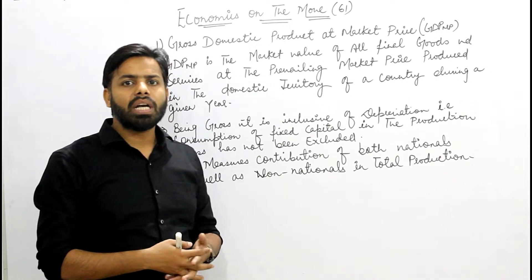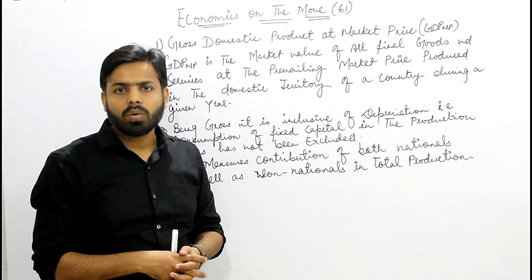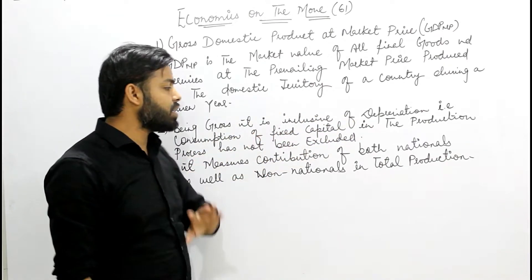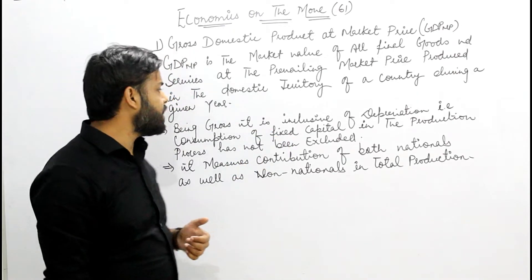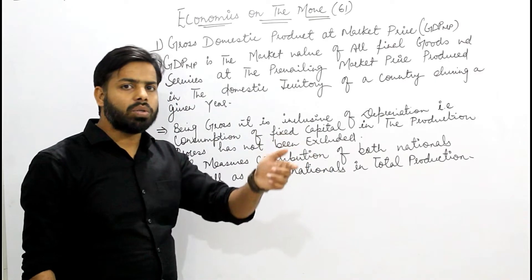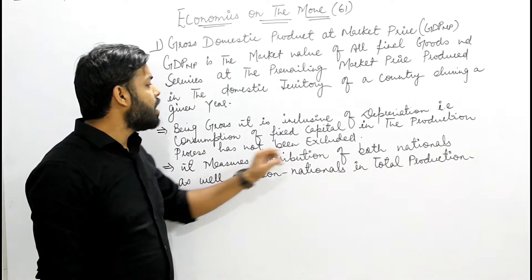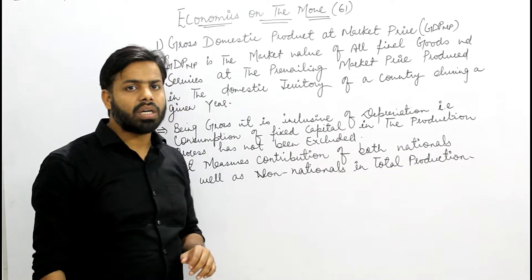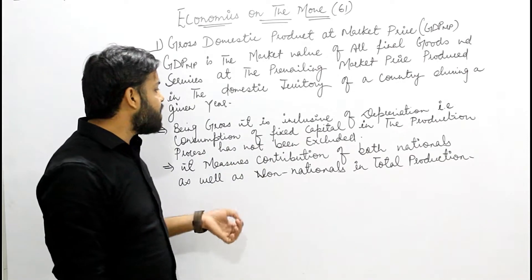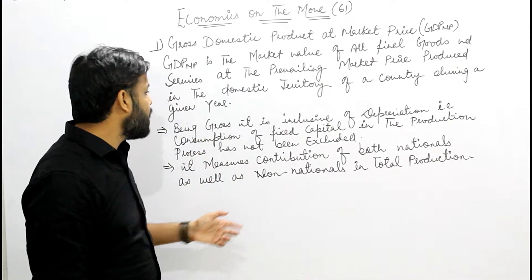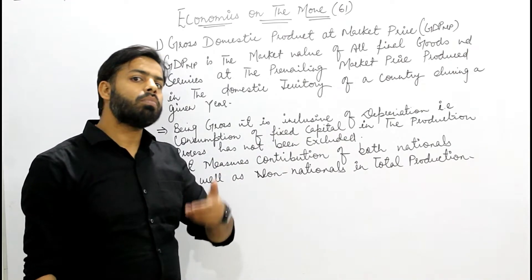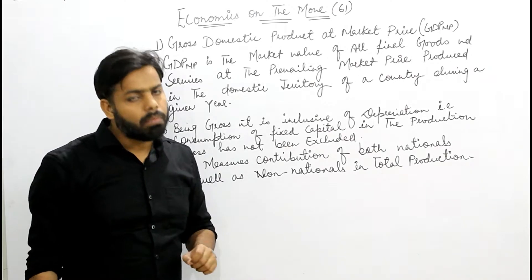जब हम GDP MP की बात करते हैं तो market value के हिसाब से सारे final goods and services जो दिए जा रहे हैं, उन पूरे सामानों की value होती है। यहाँ पे हम indirect tax और subsidies जैसी चीज़ों को भी लिया करते हैं। Being gross, it is inclusive of depreciation — that is, consumption of fixed capital in the production process has not been deducted। यह national as well as non-national दोनों का contribution measure करता है — यानि national और non-national दोनों देश के अंदर अगर काम कर रहे हैं तो वो GDP at market price होगा।